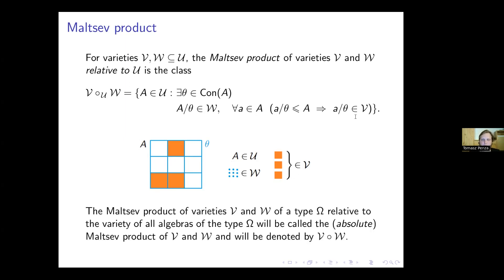This is a relative Malcev product, but I was working on the absolute Malcev product — the Malcev product relative to the variety of all algebras of a given type. If we have two varieties V and W of the same type omega, then the Malcev product relative to the variety of all algebras of type omega I will call the absolute Malcev product, or just the Malcev product of V and W.